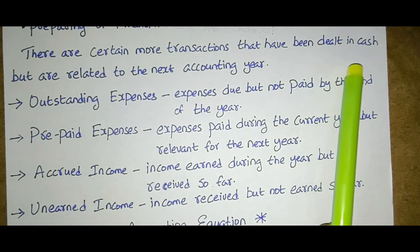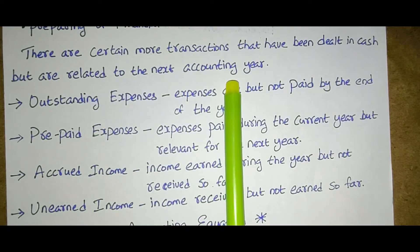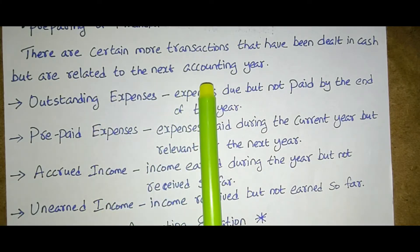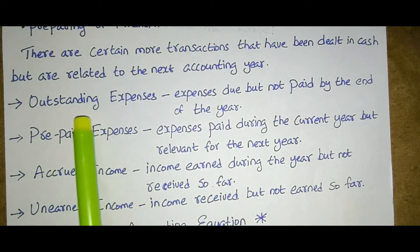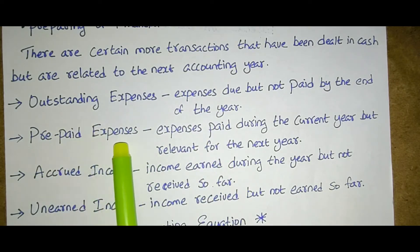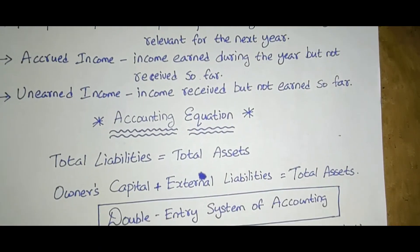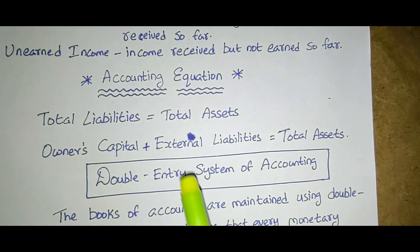These are transactions that have been dealt in cash but are related to the next accounting year. We should know the meaning of outstanding expenses, prepaid expenses, accrued income, and unearned income — and which category of accounting they occupy.